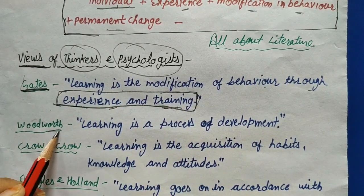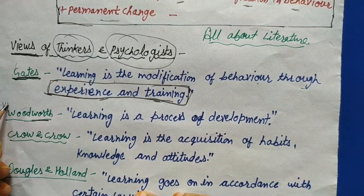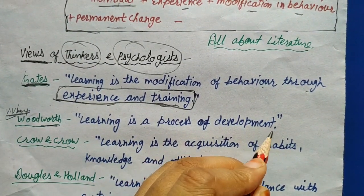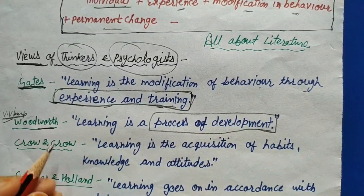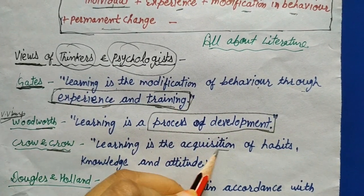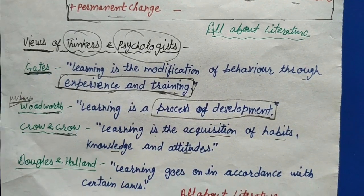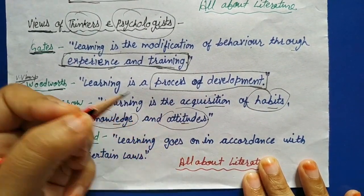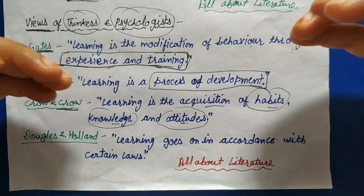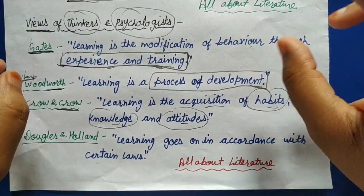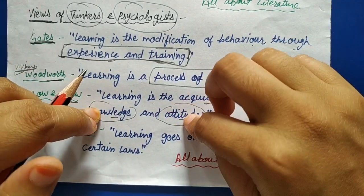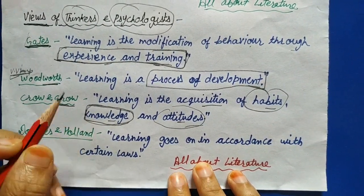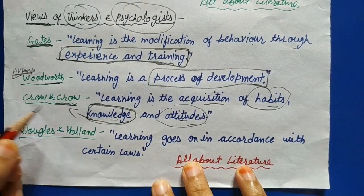Next, Woodward — who is very important from your exam point of view — says: 'Learning is a process of development.' The hint is process of development. Then Crow and Crow say: 'Learning is the acquisition of habits, knowledge, and attitude.' Remember three things: habits, knowledge, and attitude. Every time they ask this definition, recognize these three words and you can mark your answer without even seeing the options.